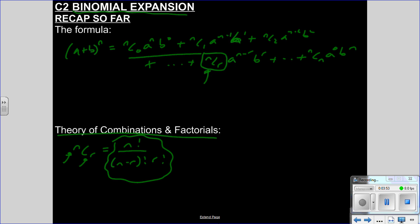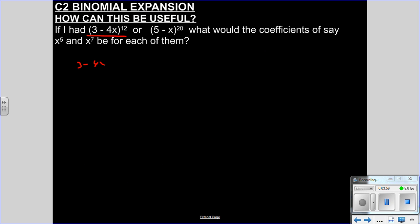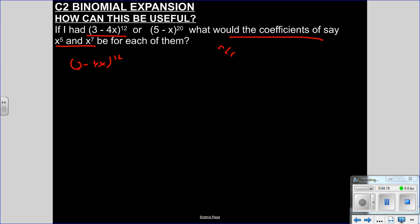Let's say we have (3 − 4x)^12 and we're asked for the coefficients of x^5 and x^7. We don't have to expand everything — that's a waste of time. If I know the formula — n choose r times a^(n-r) times b^r — I can do this quite easily. I don't have to expand everything to find the coefficient next to x^5.